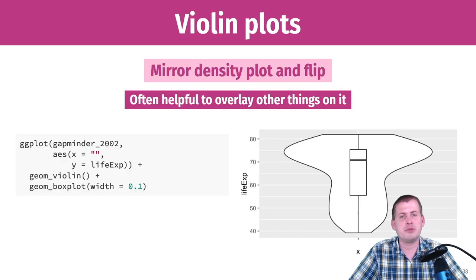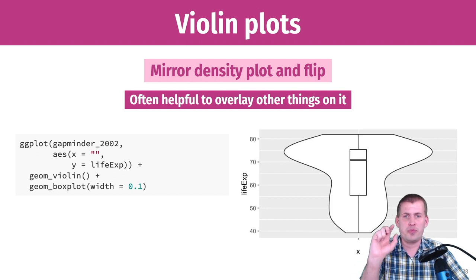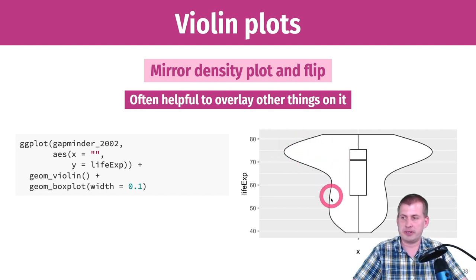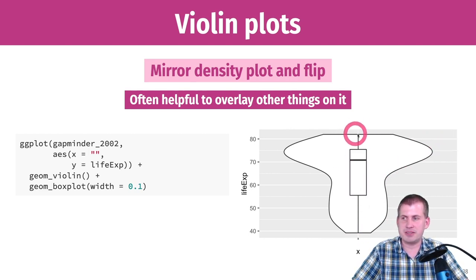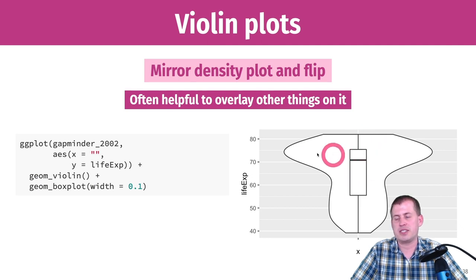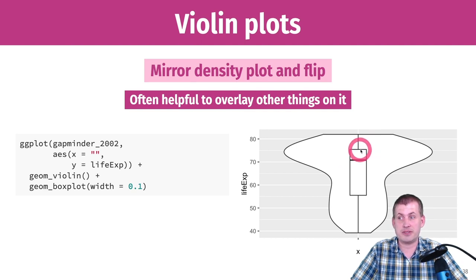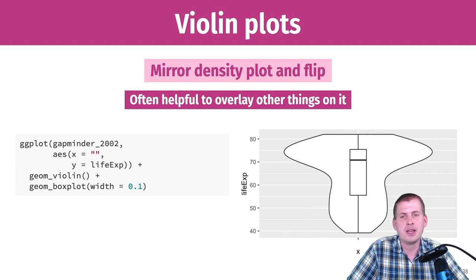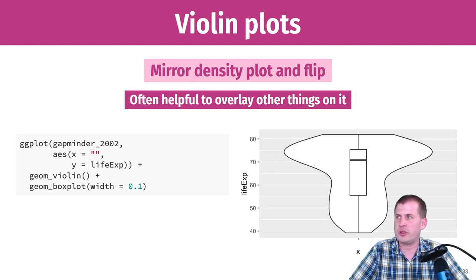A similar version is the violin plot — a density plot that is rotated, flipped, and mirrored. The density plot from before becomes two density plots placed side by side. The line in the middle is actually a box plot layer I added on top, which is often helpful for showing multiple layers of information. This gives you the median, 25th and 75th percentiles, minimum, maximum, and the shape of the data all at once.